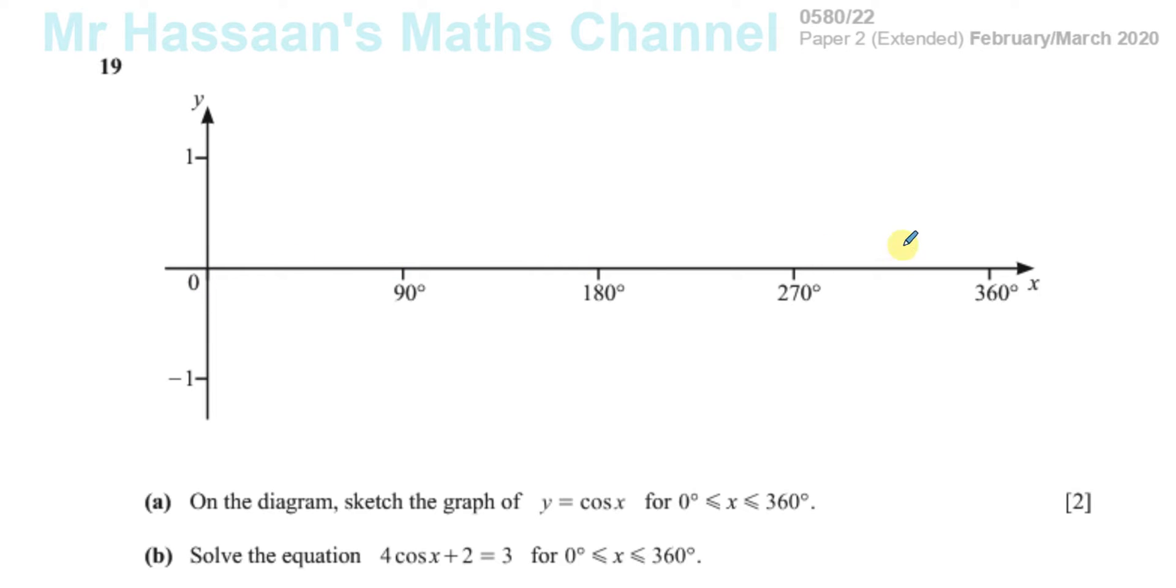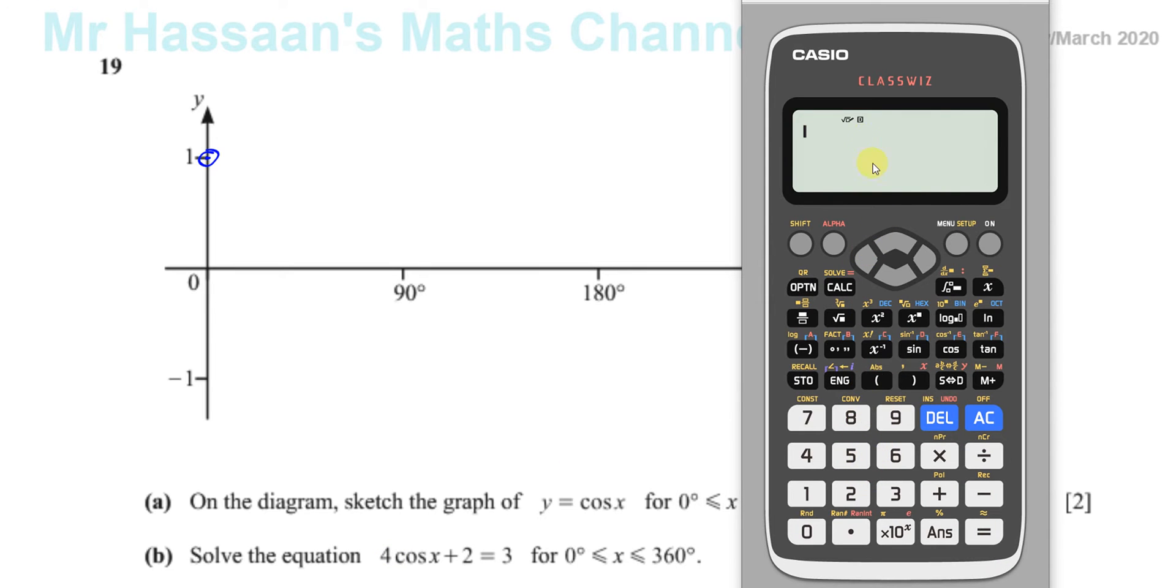For example, cosine of 0° we know is equal to 1, and that's what your calculator would confirm. So take out the calculator, make sure that it's in degree mode, which it is. There's a little D there. If it wasn't, you'd press shift and menu and unit and change it to degree, which it already is.